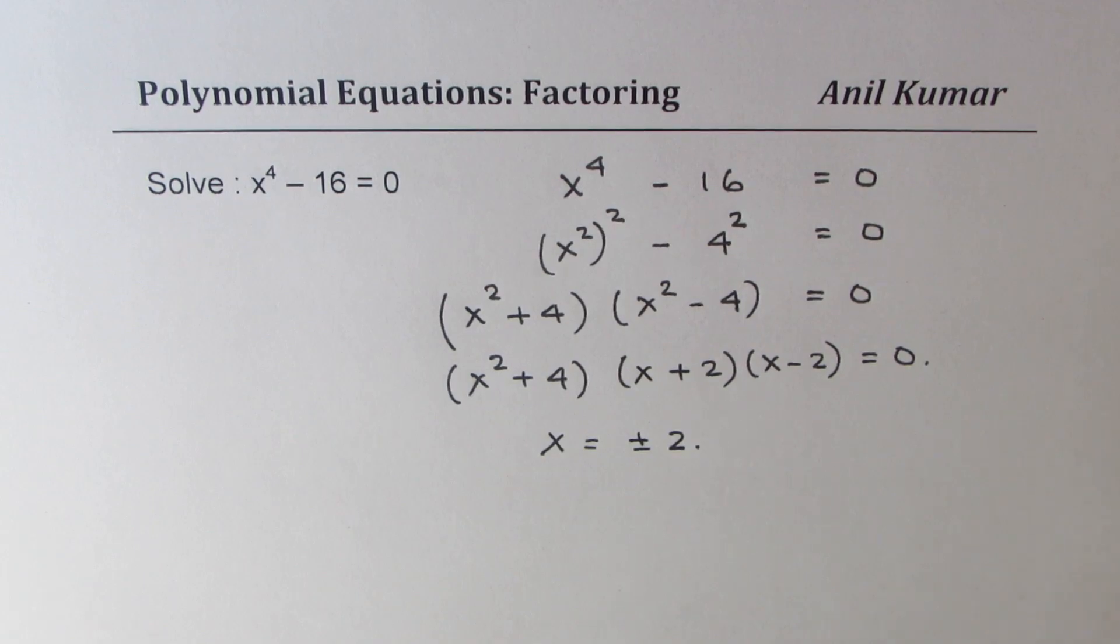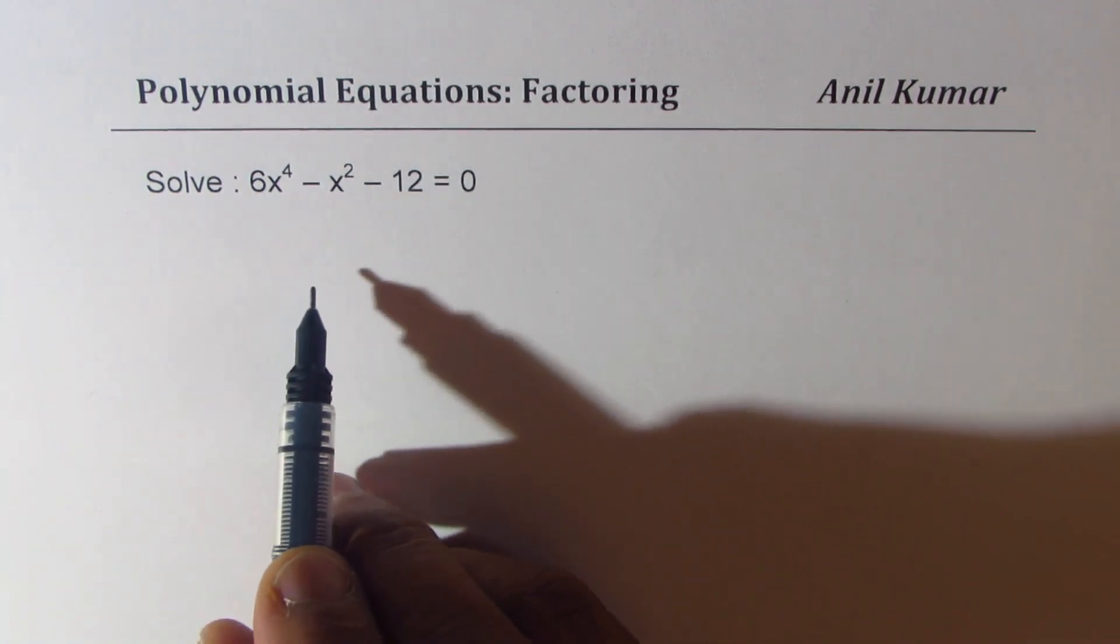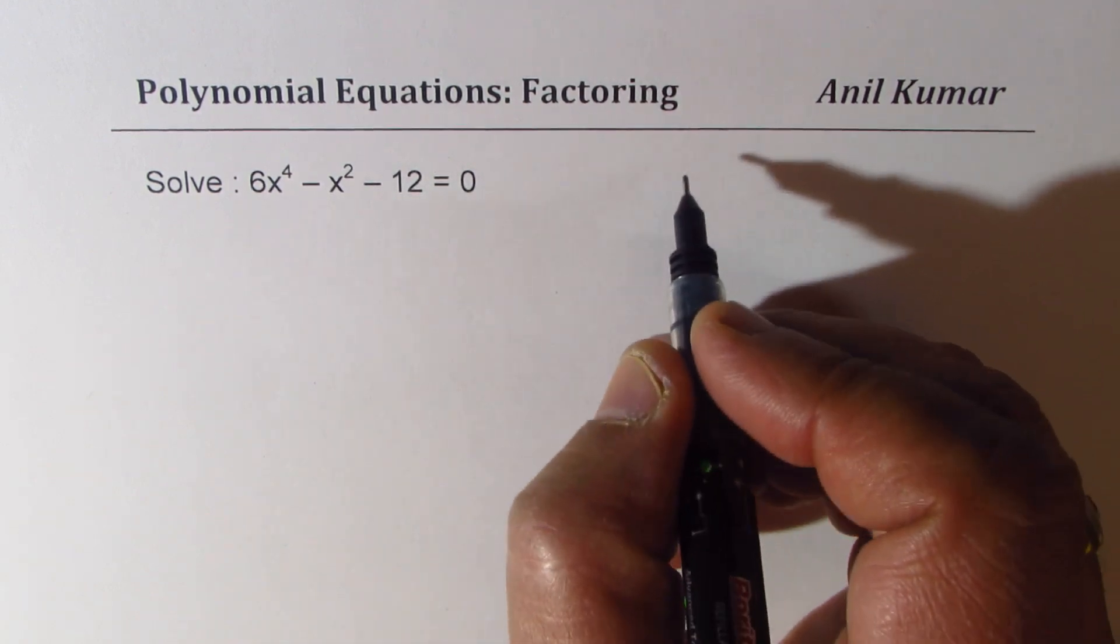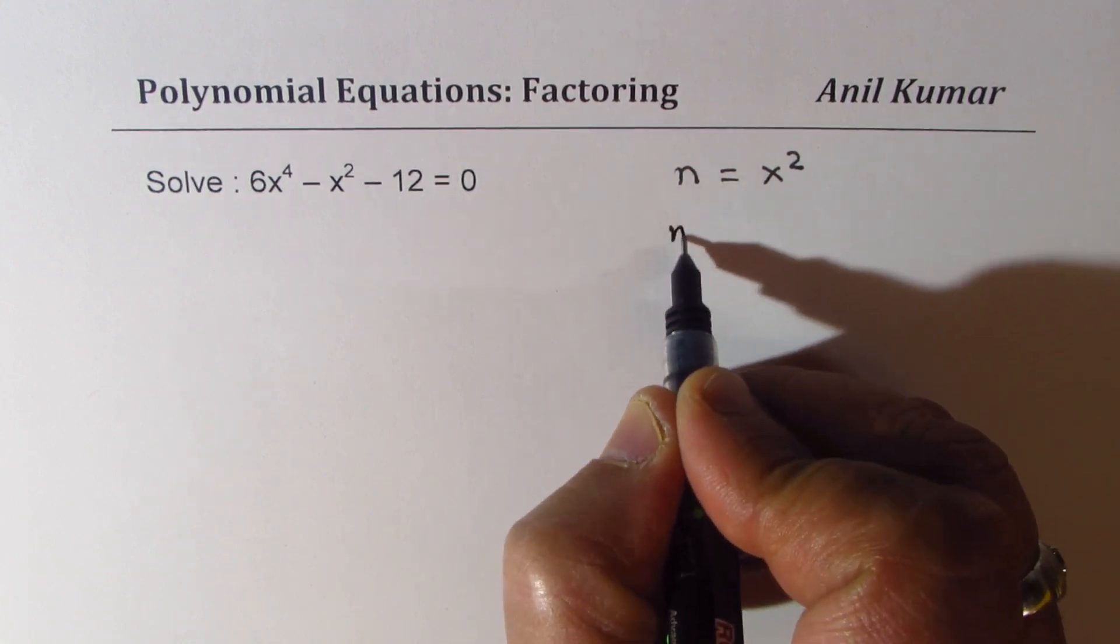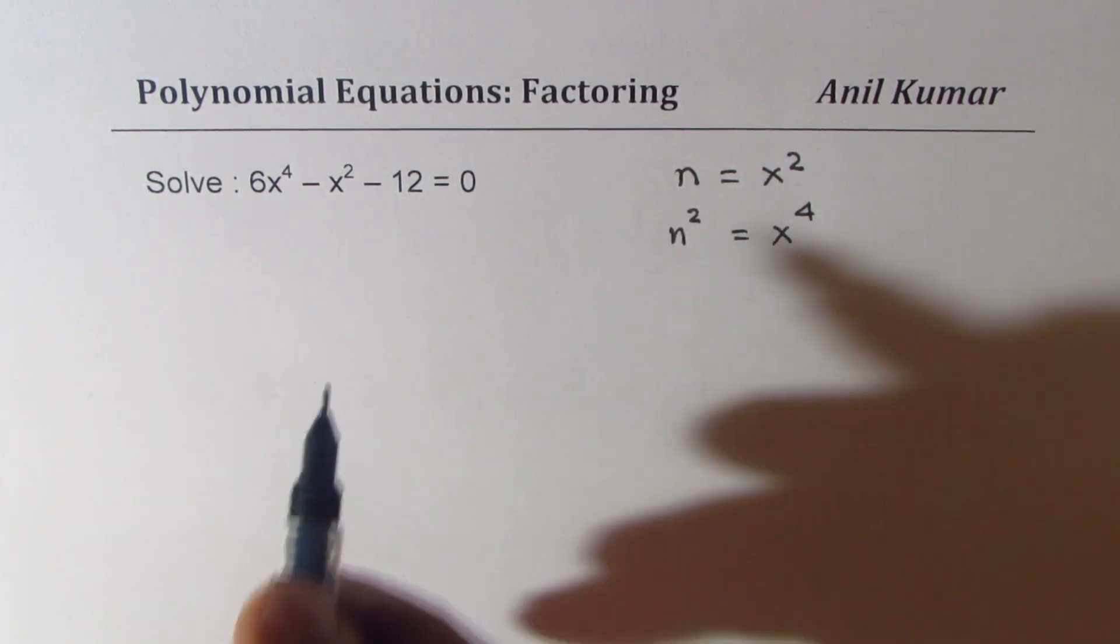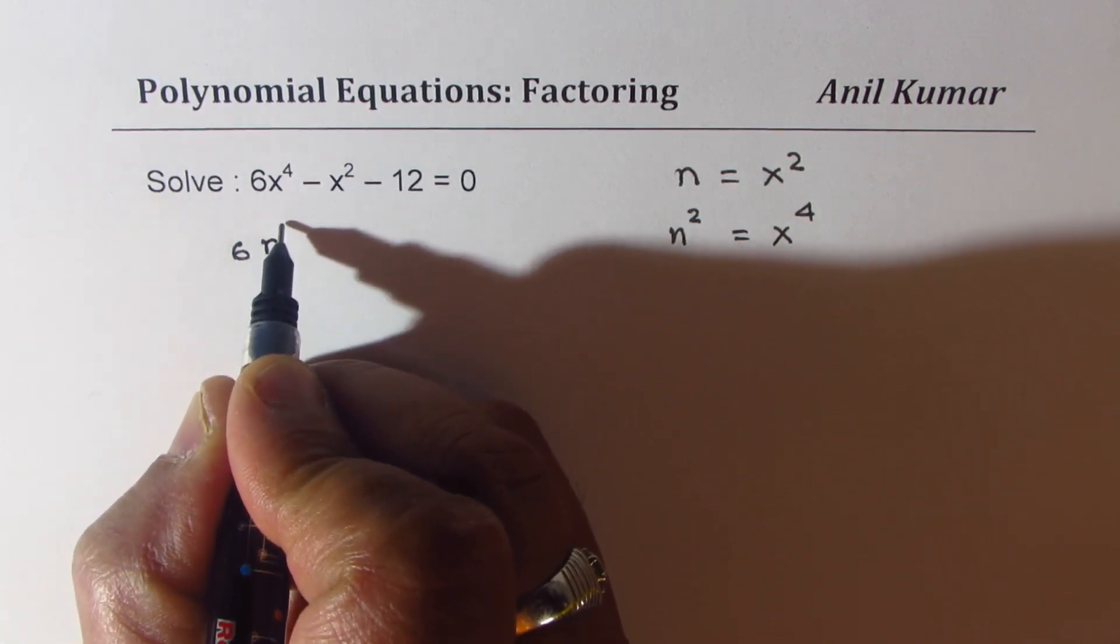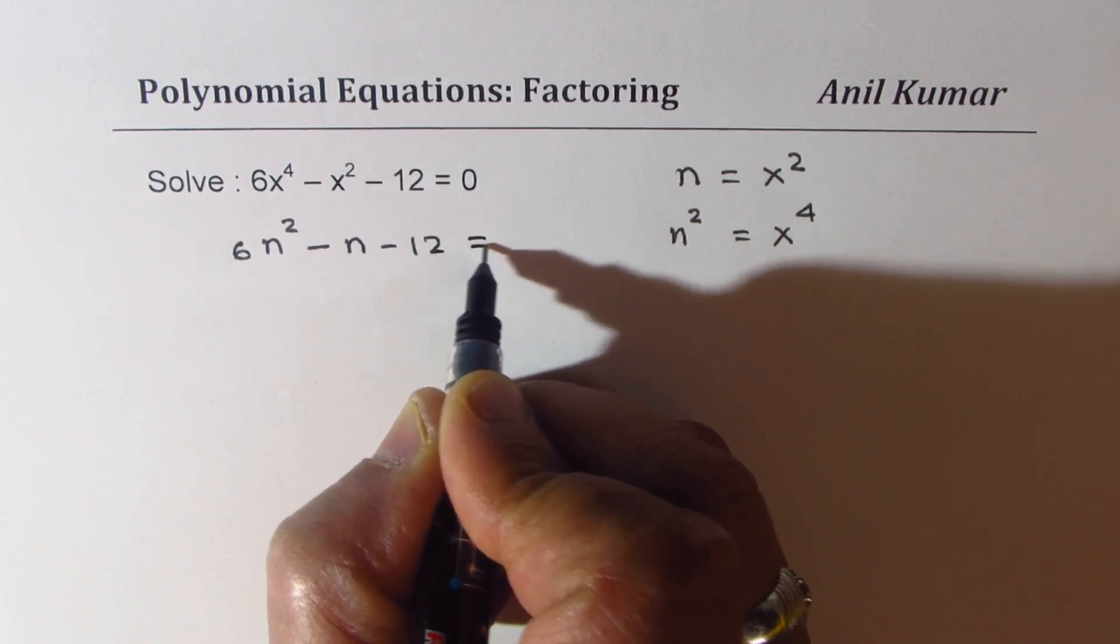The last question here is 6x to the power of 4 minus x squared minus 12. In this quadratic equation, you can make a substitution. Let's say n is equal to x squared. In that case, n squared will be equal to x to the power of 4. So x to the power of 4 I'll replace with n squared. We get the equation as 6n squared minus n minus 12 equal to 0.